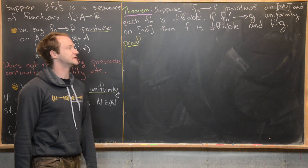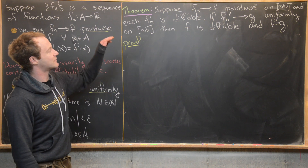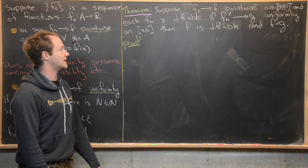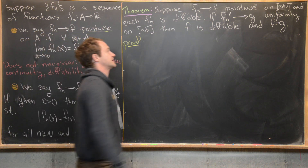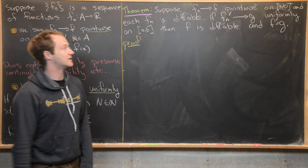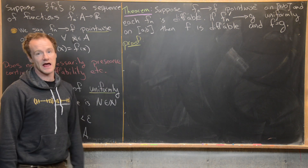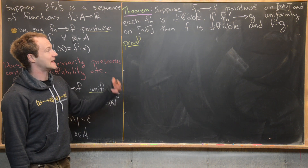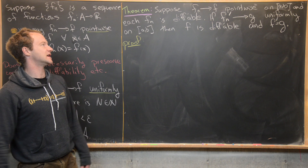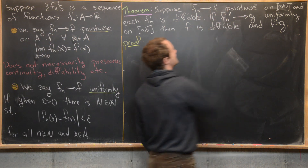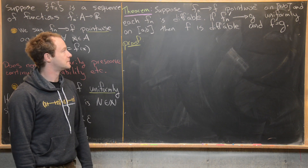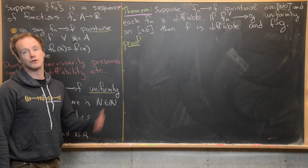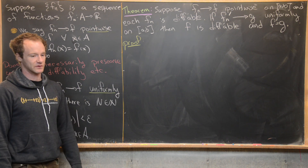Now let's look at what we're going to prove in this video. Suppose f_n converges to f pointwise on an interval [a,b], and each f_n is differentiable. Next, suppose f_n' converges to g uniformly on [a,b]. Then we will show that f is differentiable and f' equals g. It's interesting that we only need pointwise convergence for the original functions, but uniform convergence for the derivatives.